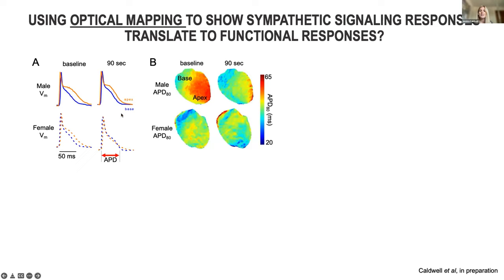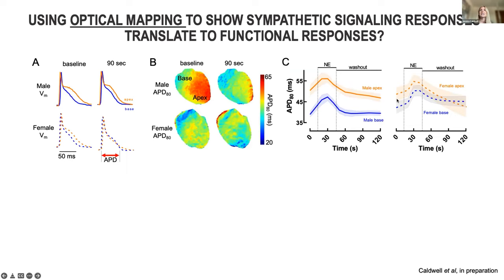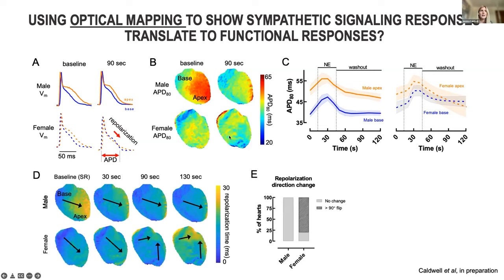How does this relate to functional responses? In the same hearts, I used optical mapping to study the key components of the action potential in response to sympathetic stimulation. The duration of the action potential in female hearts becomes shorter in the apex of the heart over time, which isn't happening in the male hearts. Looking at maps of these action potentials, in the female hearts the action potential at the base is much shorter, but over time, as the sympathetic stimulation wears off, these kinetics flip. The mean data highlights that over time the kinetics in the male heart mirror each other, but in the female heart these kinetics flip. All these alterations in action potential duration kinetics were also accompanied by a reversal in the direction of repolarization — the decay of the electrical signal.